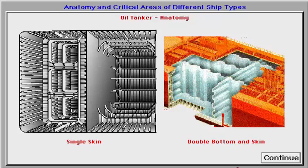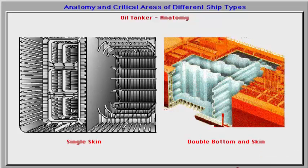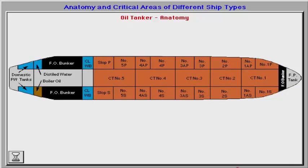The normal tank arrangement of a traditional VLCC single skin oil tanker is 5 or 6 wing tanks at both sides with a centre tank in between. Some wing tanks are either clean ballast tanks or segregated ballast tanks. Fore and aft parts are not much different from other ship types, having ballast tanks forward and machinery spaces with tanks aft.